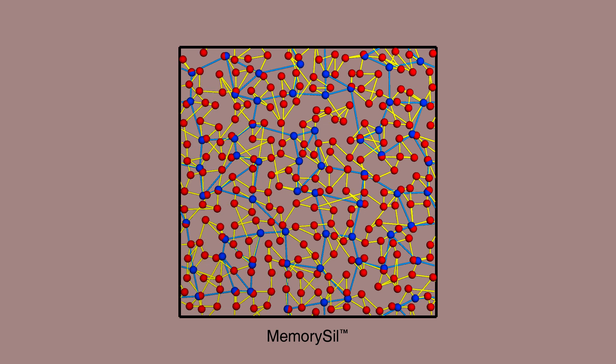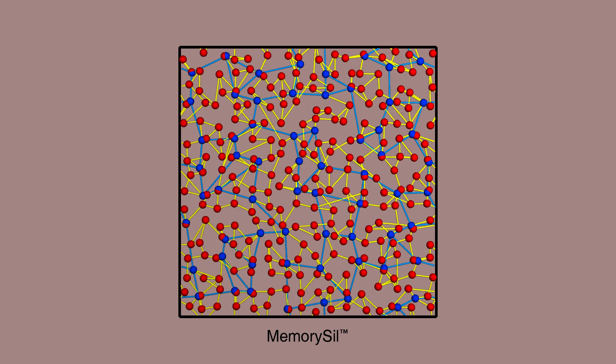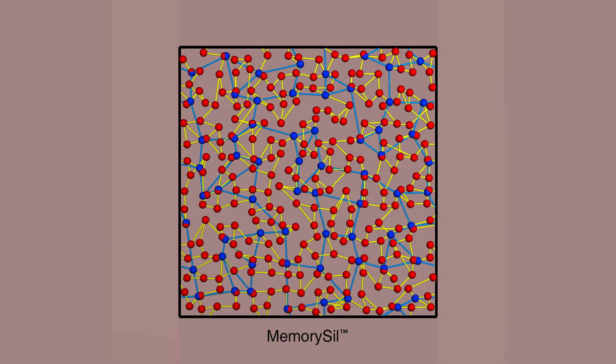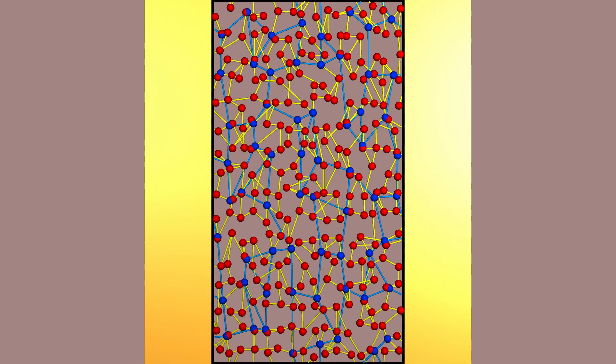Memory sill is a network liquid piggybacking on a network solid, and that dual network arrangement gives it some remarkable properties. Most importantly, it has shape memory.